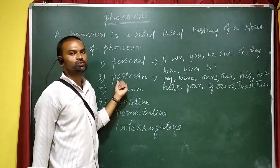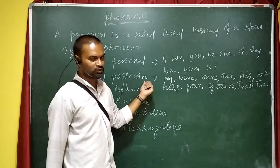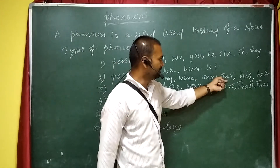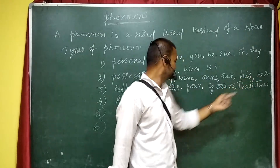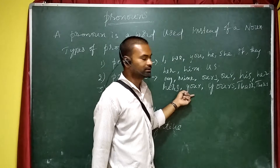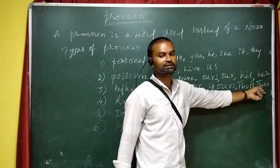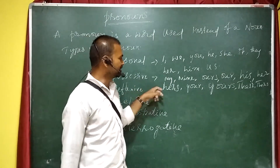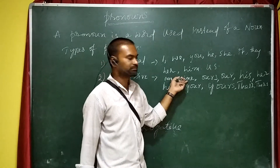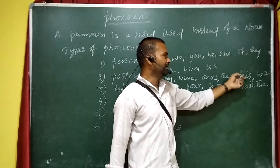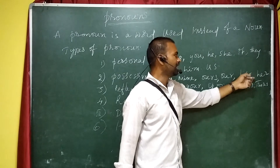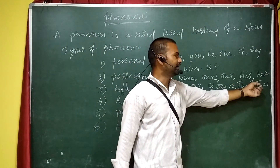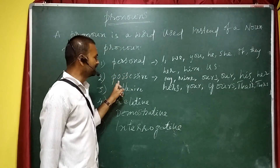And second one is possessive pronoun. Possessive pronouns include: my, ours, our, your, yours, their, theirs. So first one is personal pronouns and second one is possessive pronouns.